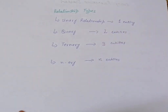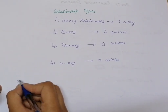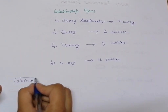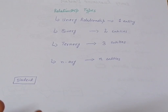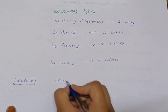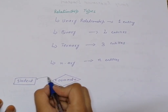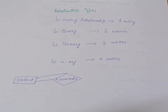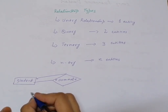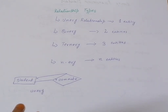For an example of a unary relationship, let's take 'student.' A student lives in a hostel and is sharing a room with another roommate. This is a unary relationship because both residents of the particular room are students — so a student entity has a relationship with itself.